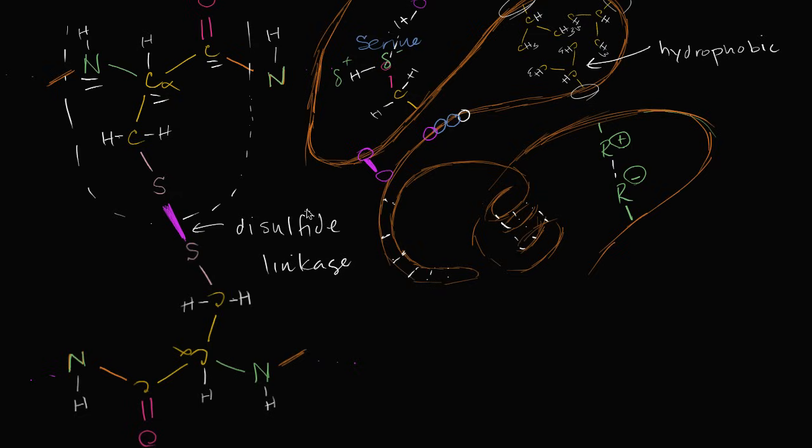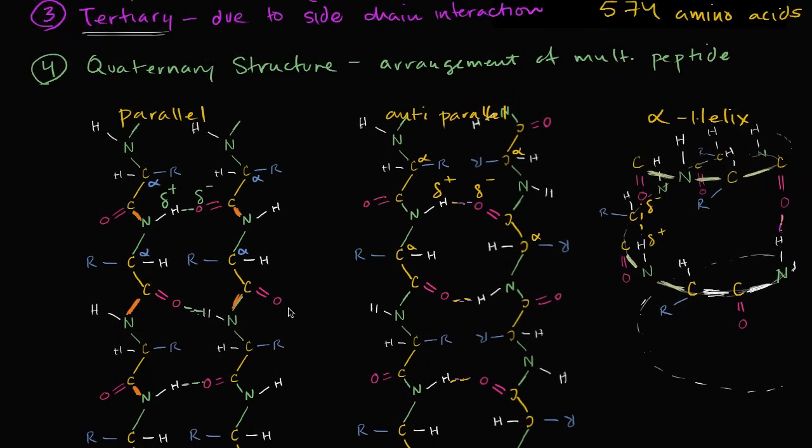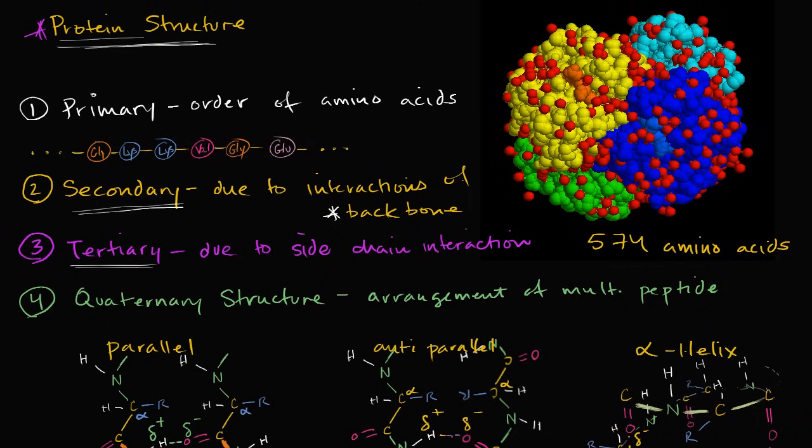So hopefully this gives you an appreciation for all of the interactions that might occur to give a protein a structure. And then last but not least, of course, you have the quaternary structure, which is how do you fit together multiple polypeptide chains. And all of this whole series of videos is just to give you an appreciation for even if you know the sequence, the different shapes and the different interactions that a protein can actually have.